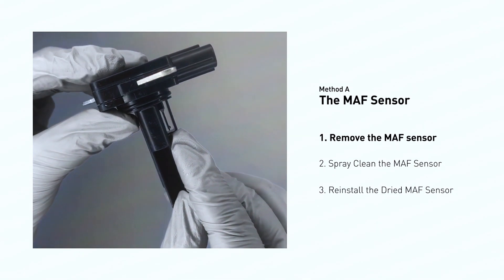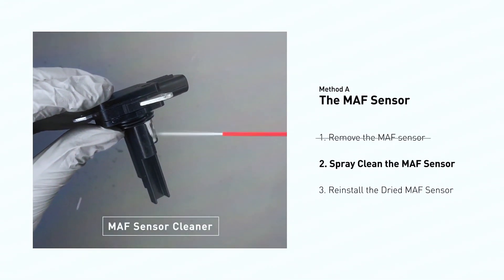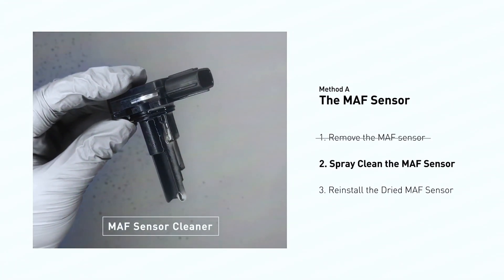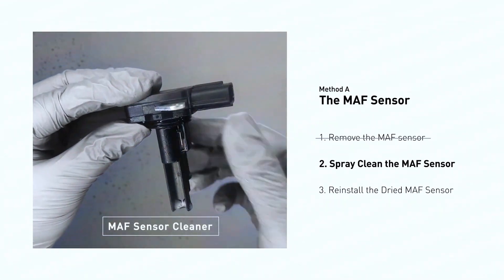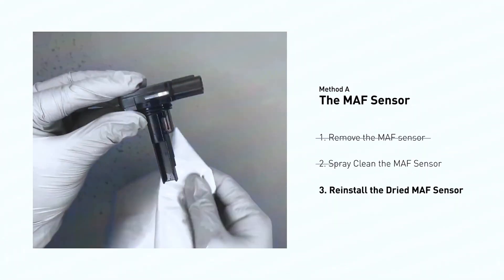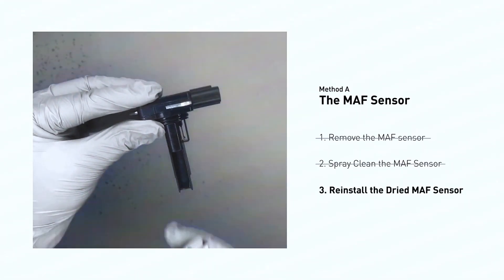You can spray MAF sensor cleaner onto the wire, perpendicular to the ground, so that it won't damage the MAF sensor. Then reinstall the MAF sensor back in the car after it gets dry.